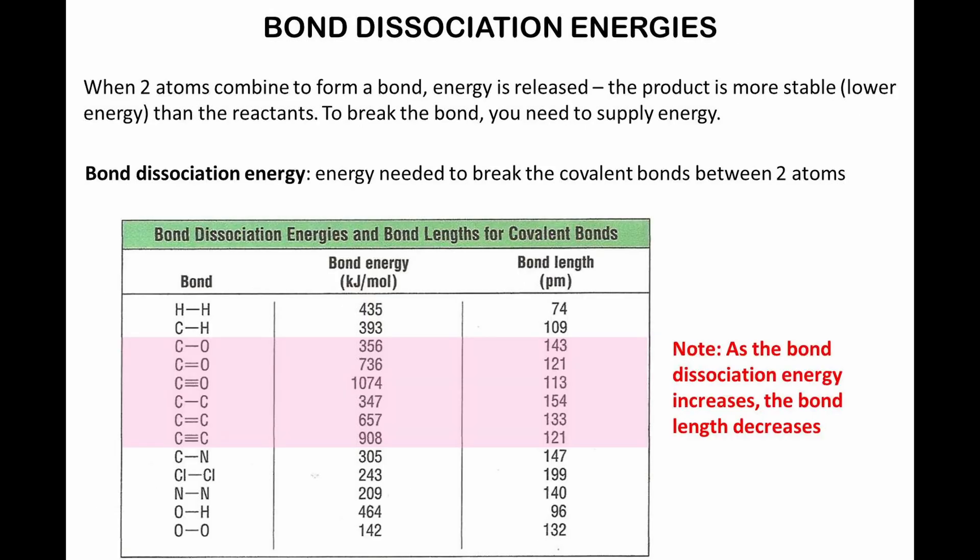When two atoms combine to form a bond, energy is released. The product is more stable, meaning that it is in a lower energy status than the reactants. To break the bond, you need to supply energy, and this is called the bond dissociation energy. In the table below, bond dissociation energies and bond lengths are shown for some covalent bonds. You will notice that as the bond dissociation energy increases, the bond length decreases.